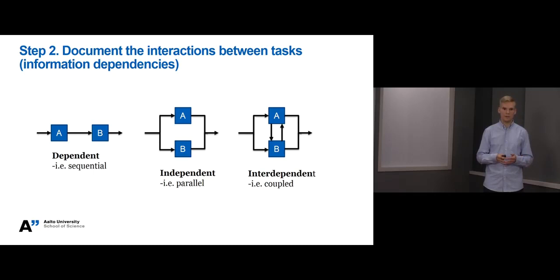In the last and third example, on the right, tasks A and B are interdependent on each other, meaning that they both require information from each other. These tasks are called coupled tasks, that should be completed at the same time in close collaboration.